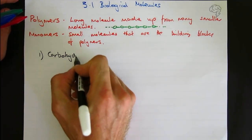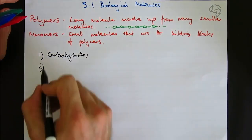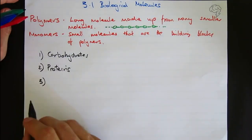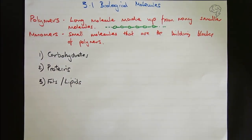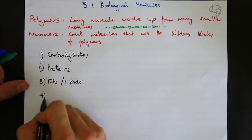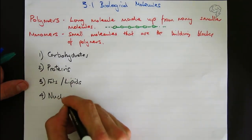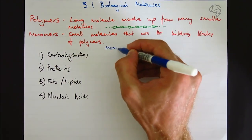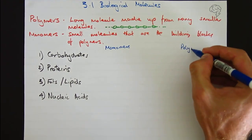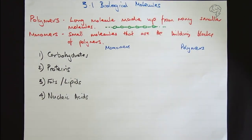What are those biological molecules? See if you can remember them. Number one, carbohydrates. Number two, proteins. Number three, fats or lipids. If we're talking about lipids we're also talking about fats, they are one and the same. Number four, nucleic acids. These are the only four categories you need to know about.